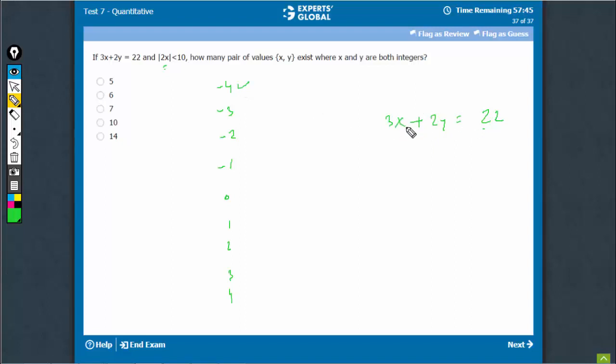In minus 3, when this comes here, this would be odd and therefore, this becomes odd and therefore, when divided by 2, this will no longer be an integer.